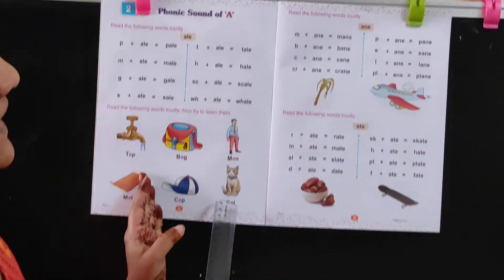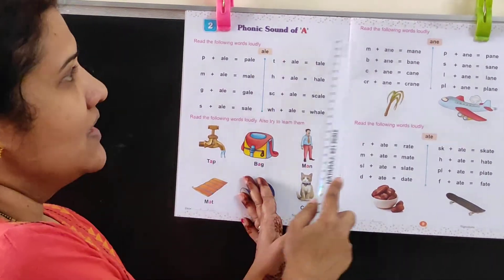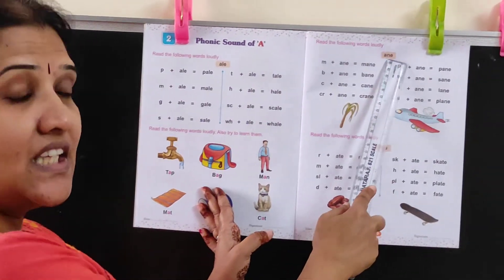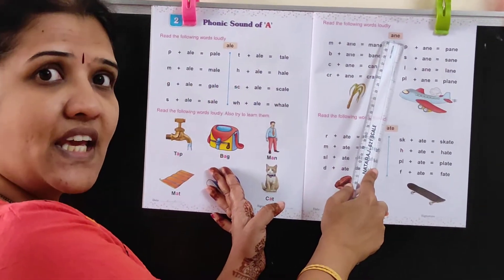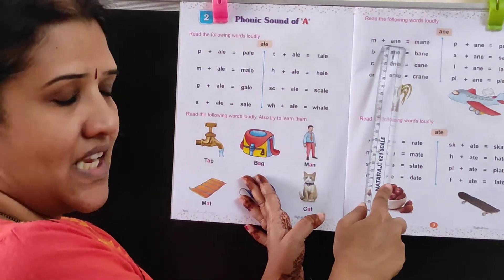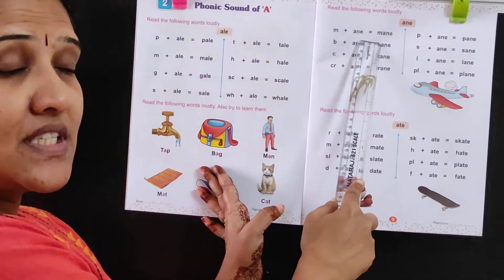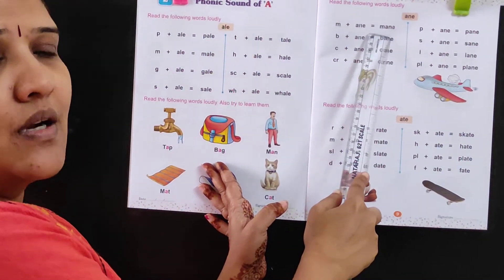Now let's see the next four letter words. This was A-L-E. This is A-N-E. What is the sound? A-N. M plus A-N, A-N-E sound is A. M plus A is Mane.